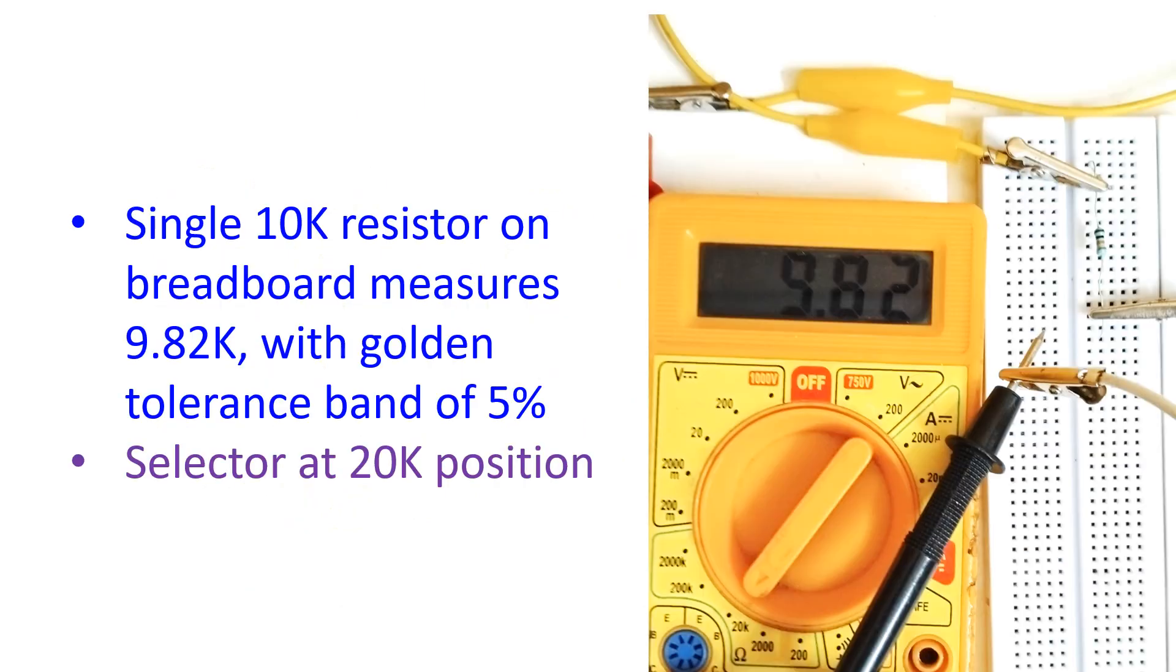A single 10k resistor on breadboard measures 9.82k with golden tolerance band of 5 percent. Selector at 20k position.